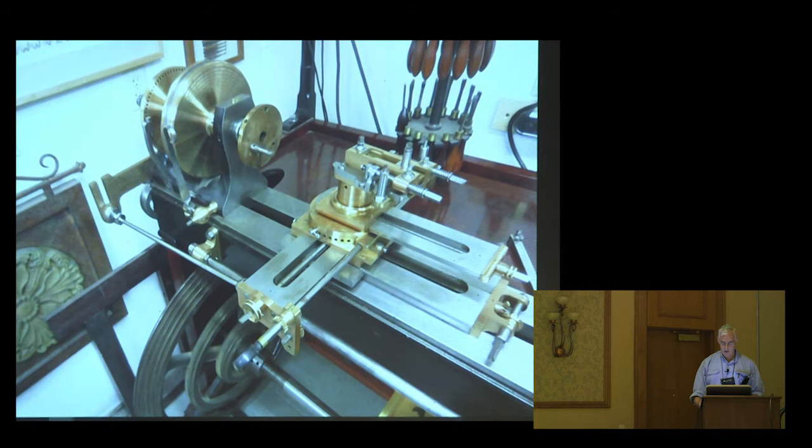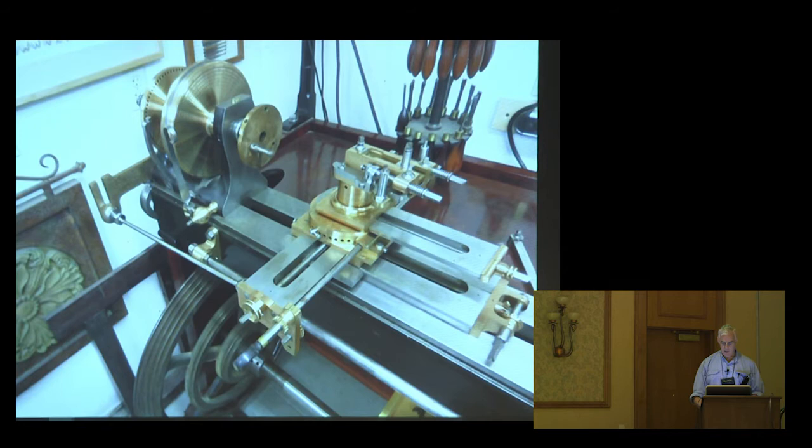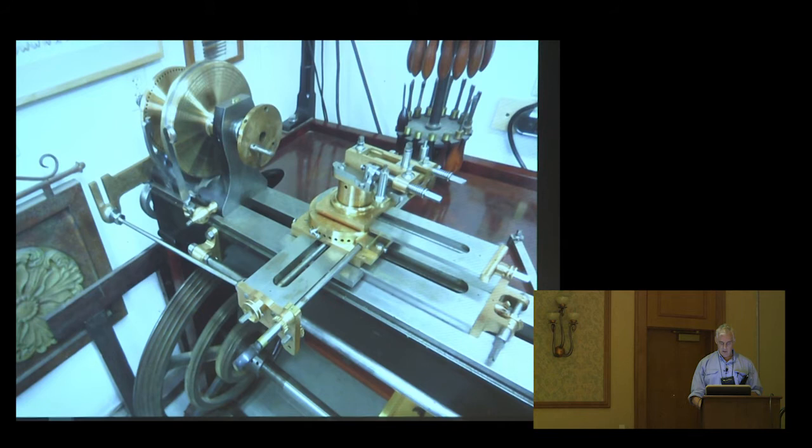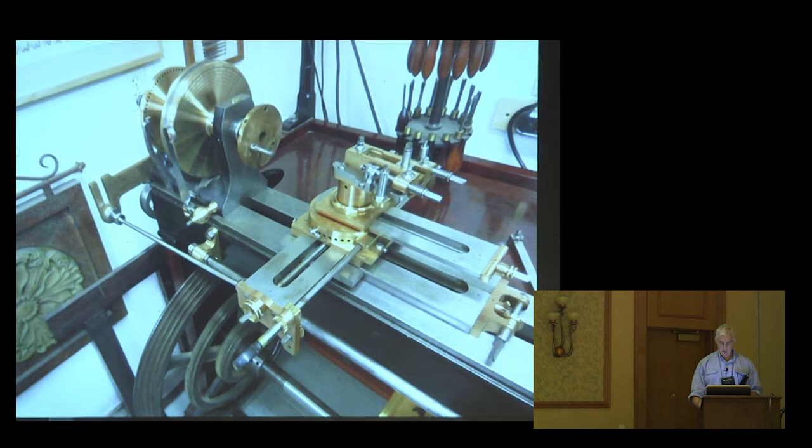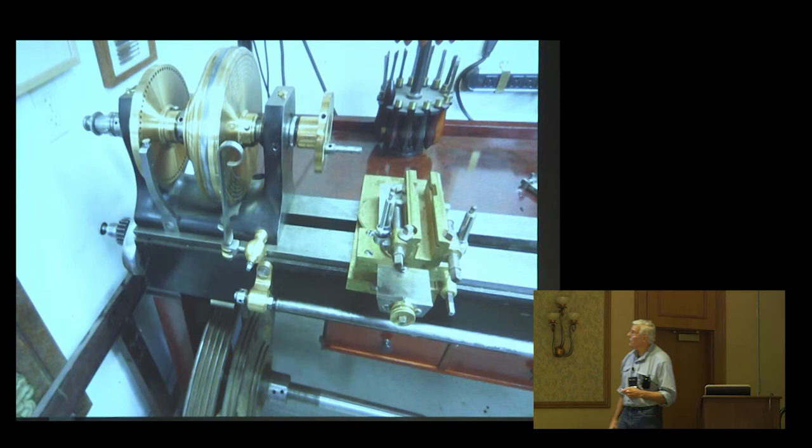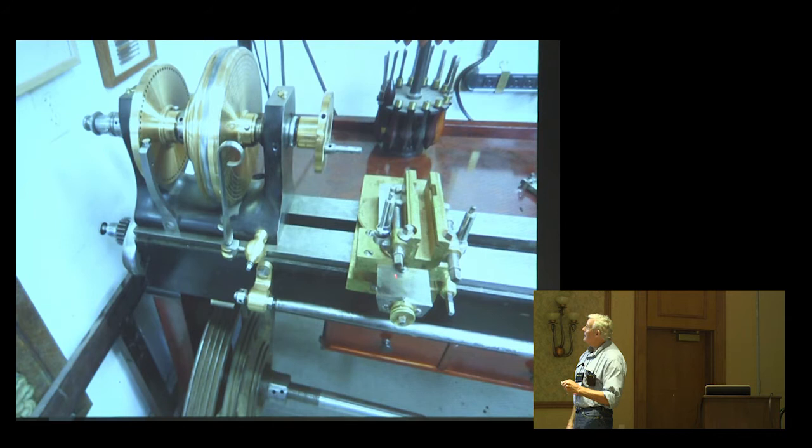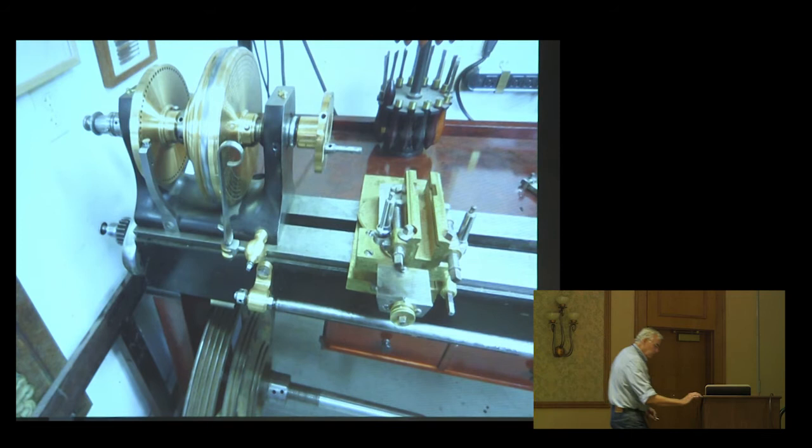This is an earlier slide rest. You notice it doesn't have all the wedding cake of all the slides underneath the spherical movement that the previous one had. There's a block here that mounts on the bed. There's a post that rises up, and then there's this slide that swings around. It has twice the capacity of that other slide rest, even though it's much simpler.